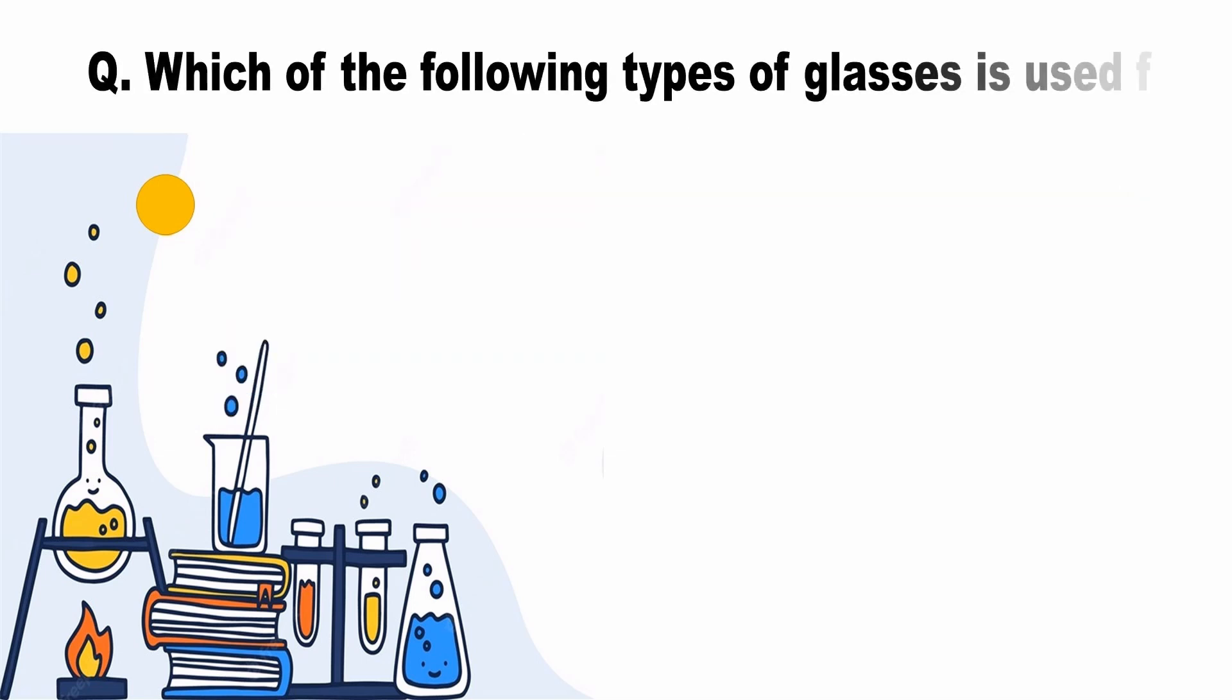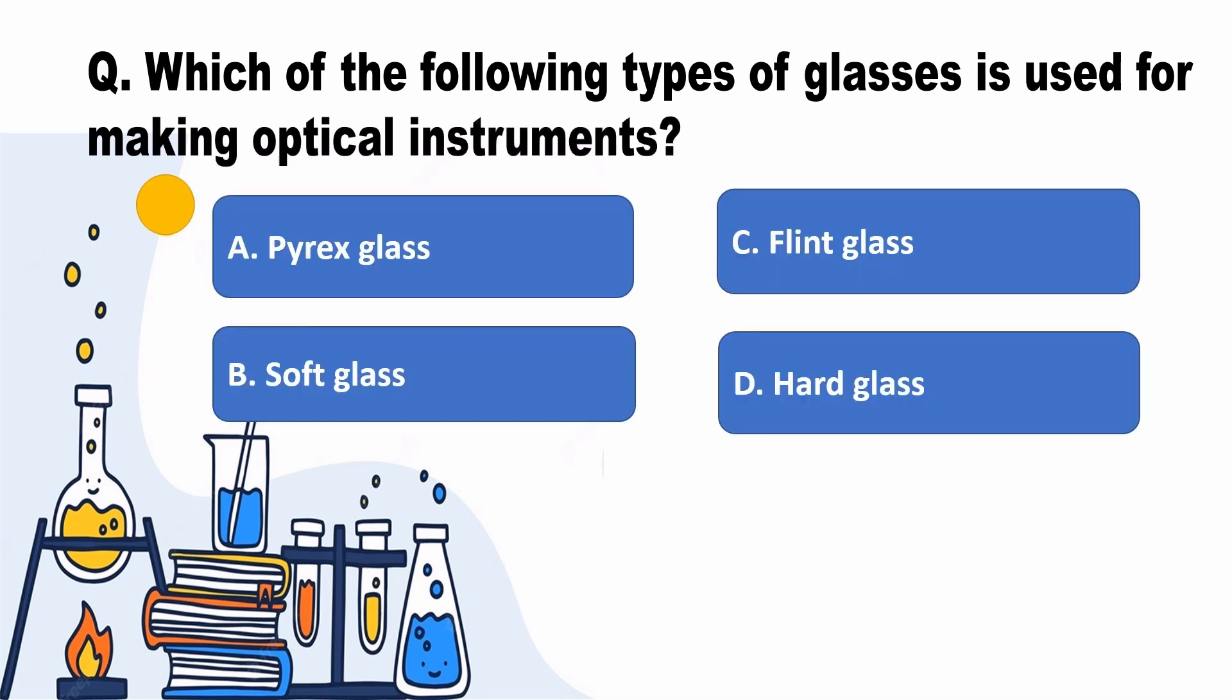Which of the following types of glasses is used for making optical instruments? Answer C, Flint glass.